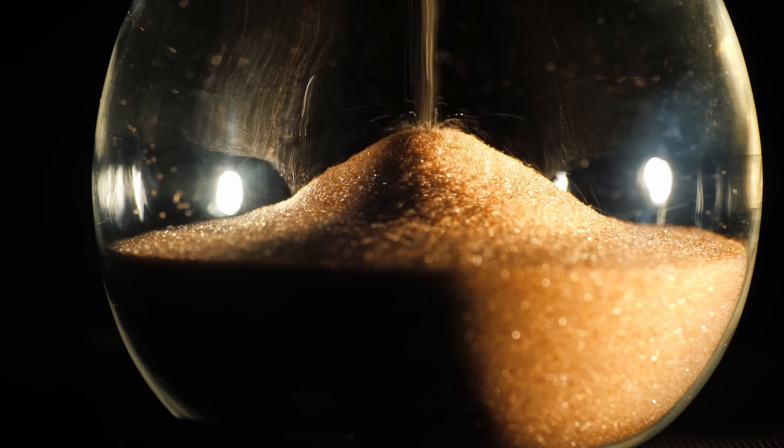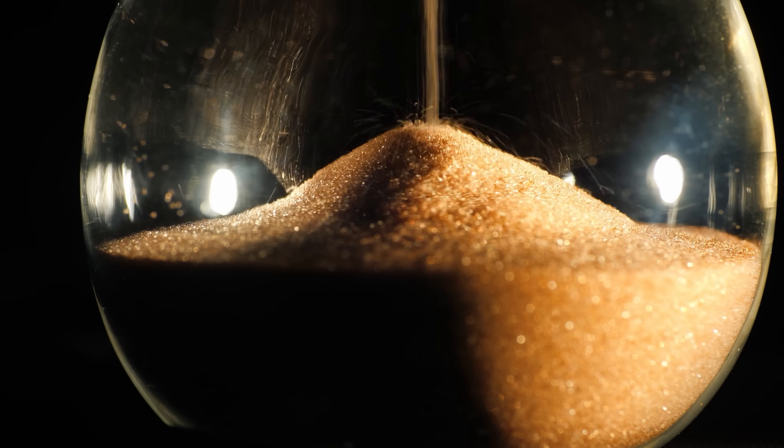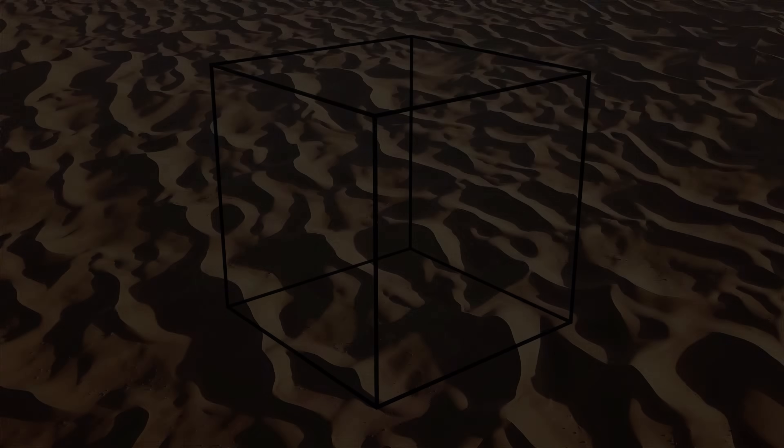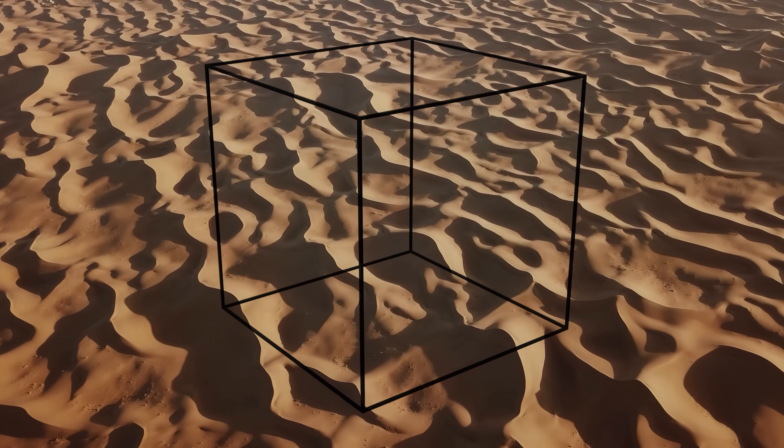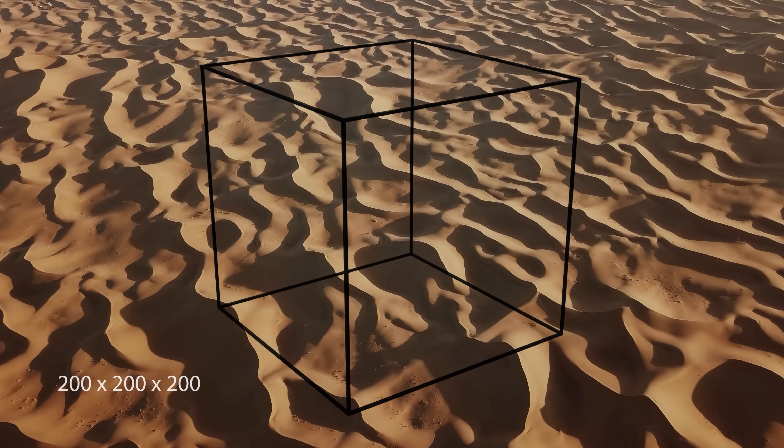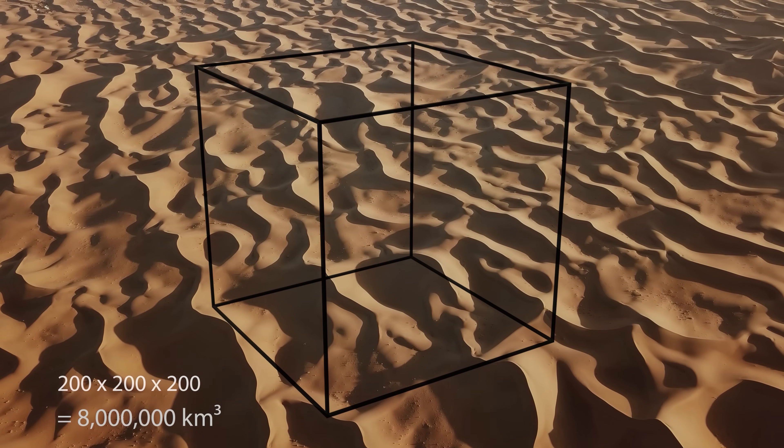If we imagine that a grain of sand represents one water molecule, we would need a cubic volume 200 km long, 200 km wide, and 200 km high, full of sand to represent the molecules.